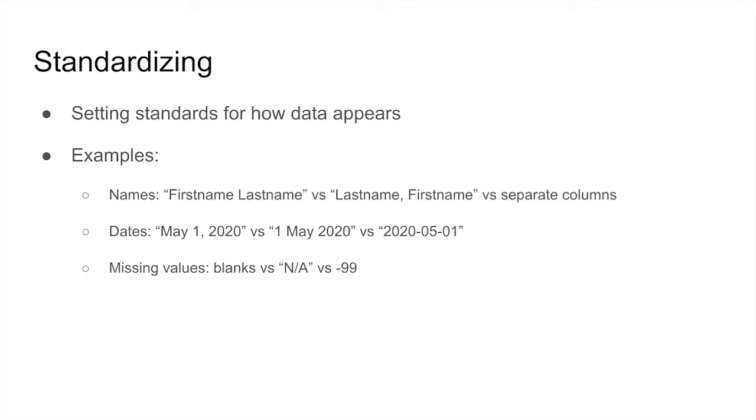For a name column, you might choose to standardize with first name coming before last name, or with last name first followed by a comma and a space and then the first name. For other projects, it might be better to separate first and last name for easier sorting or filtering.